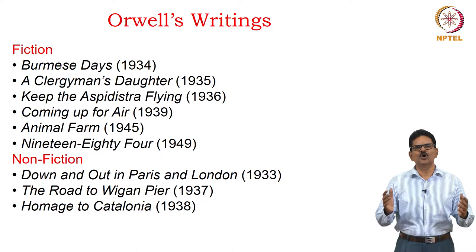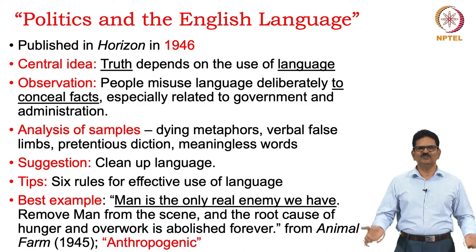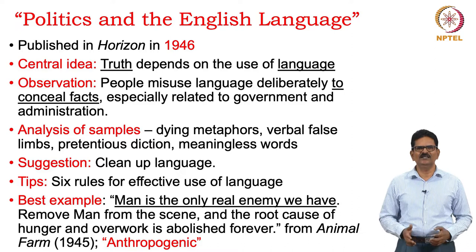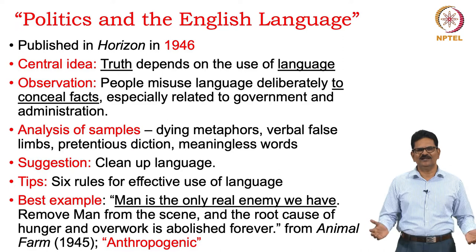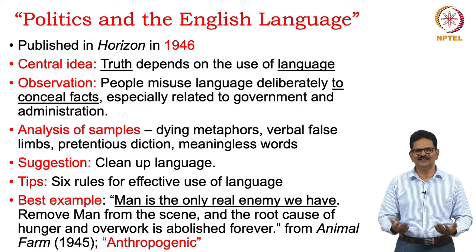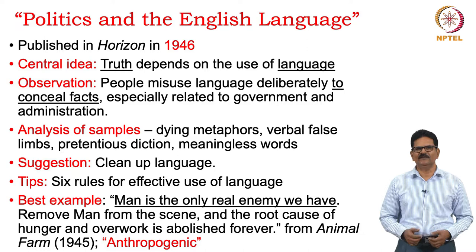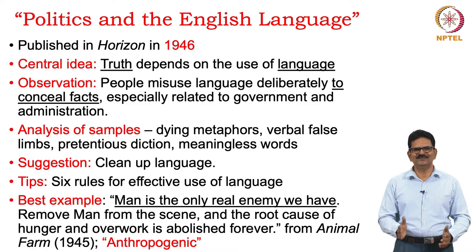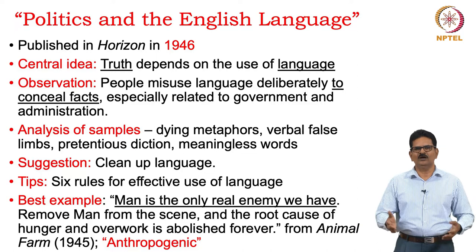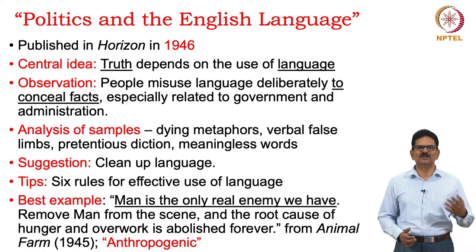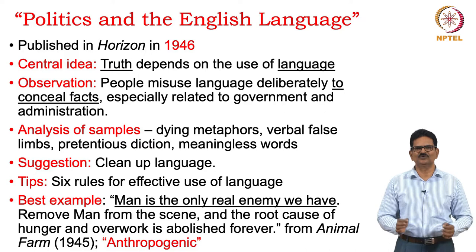We move on to the essay Politics and the English Language, originally published in the magazine Horizon in 1946. The central idea is that truth depends on the use of language — if our language is corrupt, we cannot convey facts truly. The observation is that people misuse language deliberately to conceal facts, especially related to government and administration. Orwell analyses several samples for problems in language like dying metaphors, verbal false limbs, pretentious diction, and meaningless words. He gives six golden rules for effective use of language.